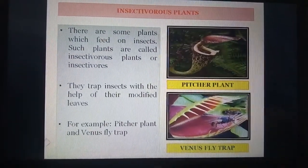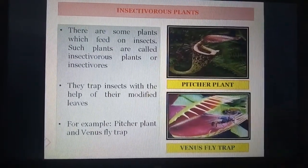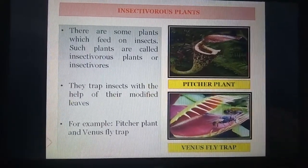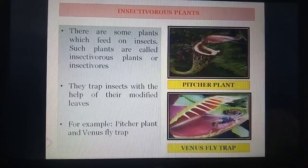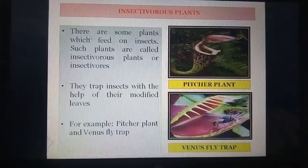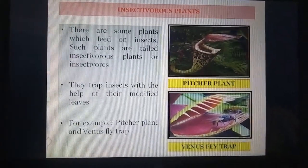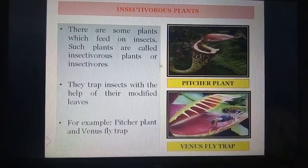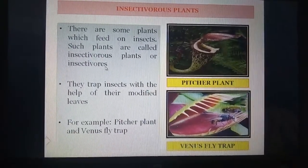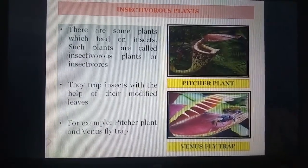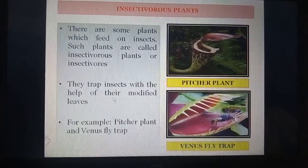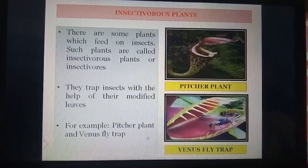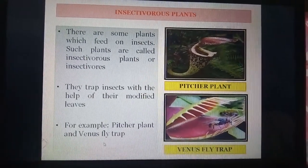Insectivorous plants: there are a few plants which can trap insects and digest them; these are called insectivorous plants. There are some plants which feed on insects, and such plants are called insectivorous plants or insectivores. They trap insects with the help of their modified leaves. For example, pitcher plant and Venus flytrap.